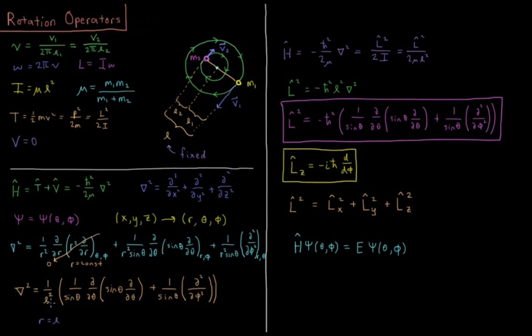We can factor out an R² from each term. So we have 1/L² times 1/sin θ d/dθ product sin θ d/dθ, plus 1/sin θ second partial with respect to φ.